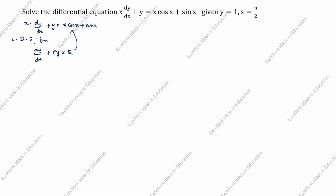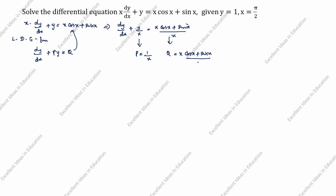We will change this to standard form. Dividing through by x: dy/dx + (1/x)y = (x cos x + sin x)/x. So p = 1/x and q = (x cos x + sin x)/x. Now we find the integrating factor: e^(∫p dx) = e^(∫1/x dx) = e^(log x) = x. So the integrating factor is x.